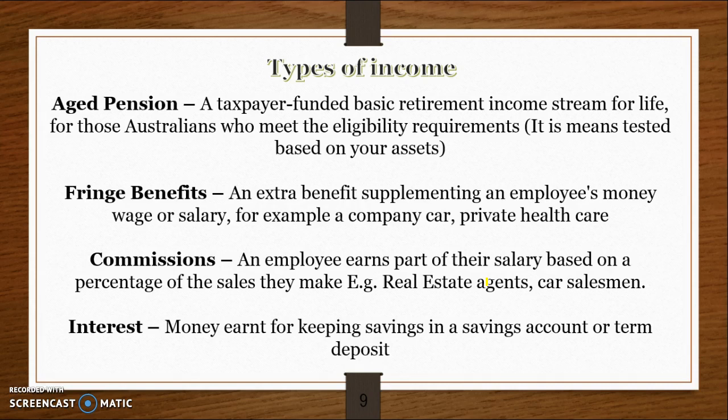The age pension is a taxpayer-funded retirement income — money you receive when you're retired if you meet certain criteria. You often only get access to it if you have under a certain amount of assets, which means it's means-tested. Fringe benefits are an extra non-cash benefit you receive on top of your normal wage or salary, such as a company car, private health insurance, or holidays.